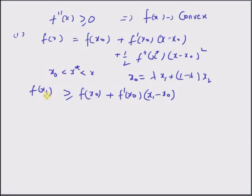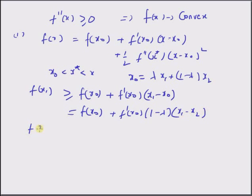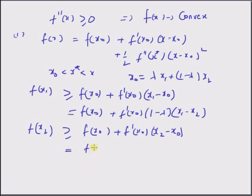So the function value at x 1 is always greater than this sum. By inserting the value of x naught, we get f of x naught plus f prime of x naught multiplied by 1 minus lambda times x 1 minus x 2. Similarly, for f of x 2, this function is greater than f of x naught plus f prime of x naught multiplied by lambda times x 2 minus x 1. Let us call these equation 1 and equation 2.